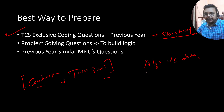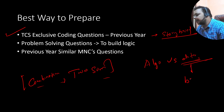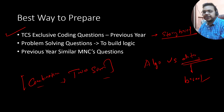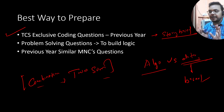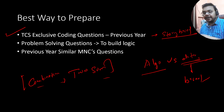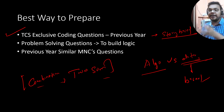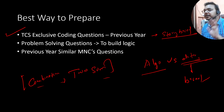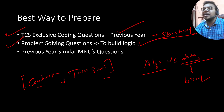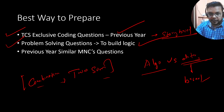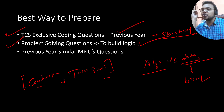Companies mostly ask algorithm-based questions, not data structure-based questions. For example, inserting a node in a linked list is a data structure-based question, but extracting even elements from an array and finding their sum is an algorithm-based question — you're building logic to implement on a data structure. Companies generally ask algorithm-based questions. That's why previous year questions are important: you get a good idea of what kind of problem-solving logic is required.